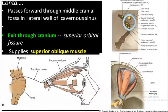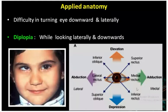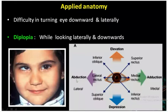You can see this is the superior oblique muscle and this is the trochlear nerve supplying it. Looking at the diagram: on the medial side we have medial rectus, on the lateral side we have lateral rectus, and we have the superior oblique. The action of the superior oblique is depression and abduction of the eyeball.